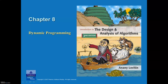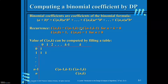In this video, I will discuss how to find the binomial coefficient using dynamic programming. The recurrence relation to find the binomial coefficient is C(n,k) = C(n-1,k) + C(n-1,k-1) for n greater than k greater than 0, with base cases C(n,0) = 1 and C(n,n) = 1 for n greater than or equal to 0.